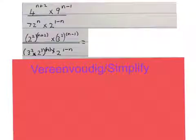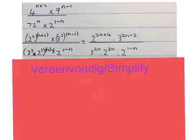Now we use exponent law 3 and we times that 2 with that n, that 2 with that 2, the 2 with the n, the 2 with the minus 1, this 2 with the n, the 3 with the n, and keep this guy.